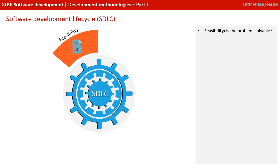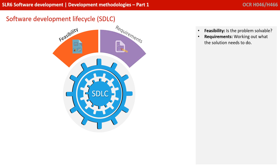First we have Feasibility: is the problem you actually want to solve even possible or solvable given current technology, time constraints and costs? If it is, then we can proceed with the project and we move on to Requirements — the stage where we work out what we actually need our finished system to do.